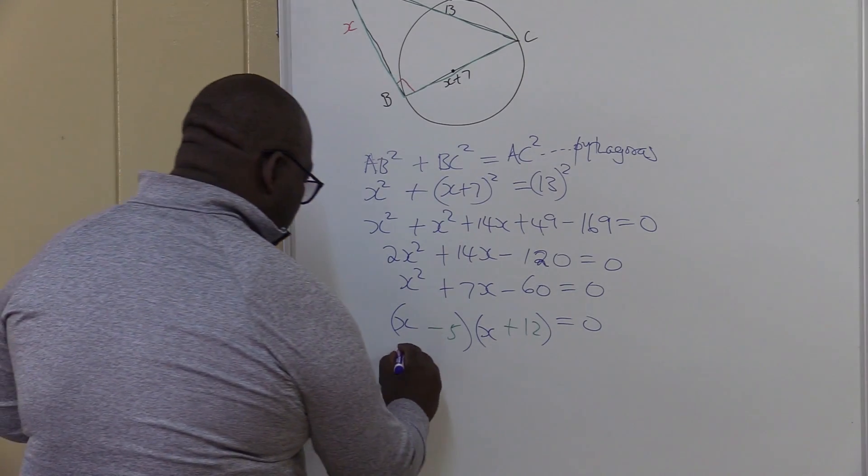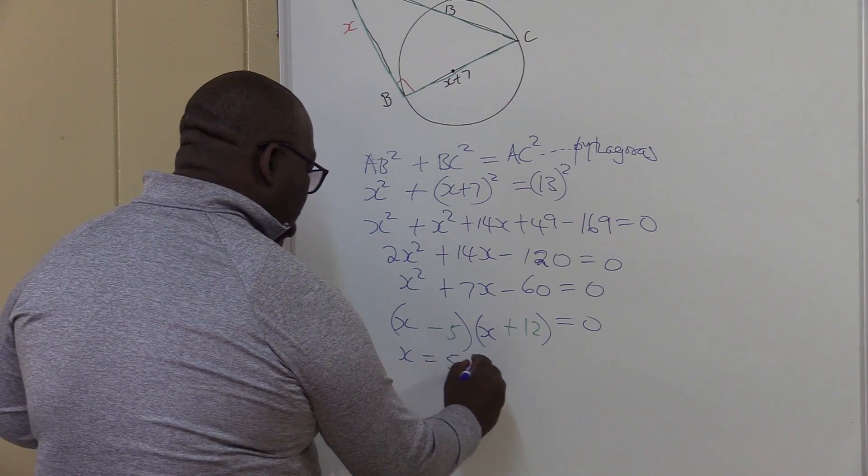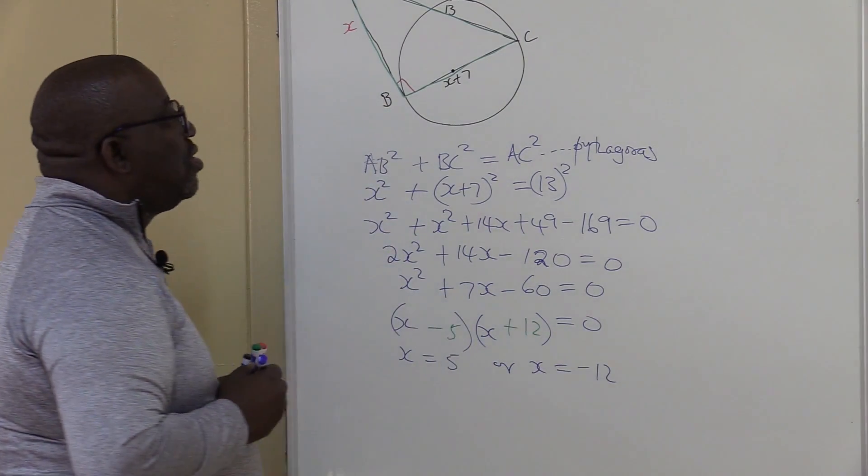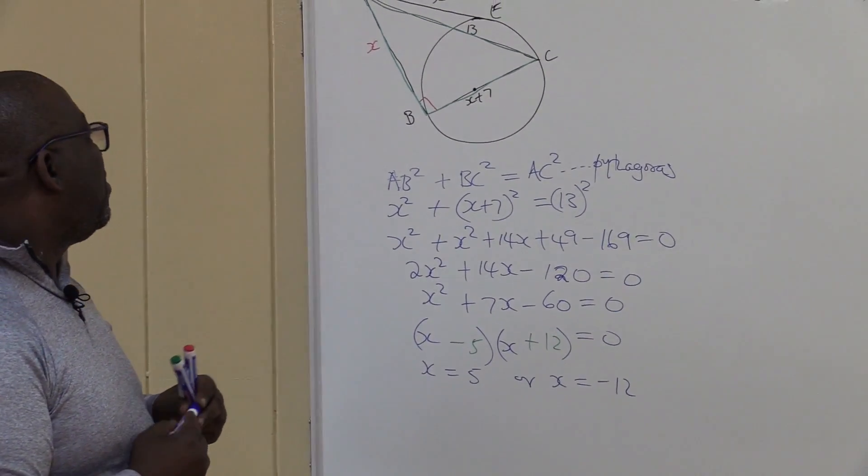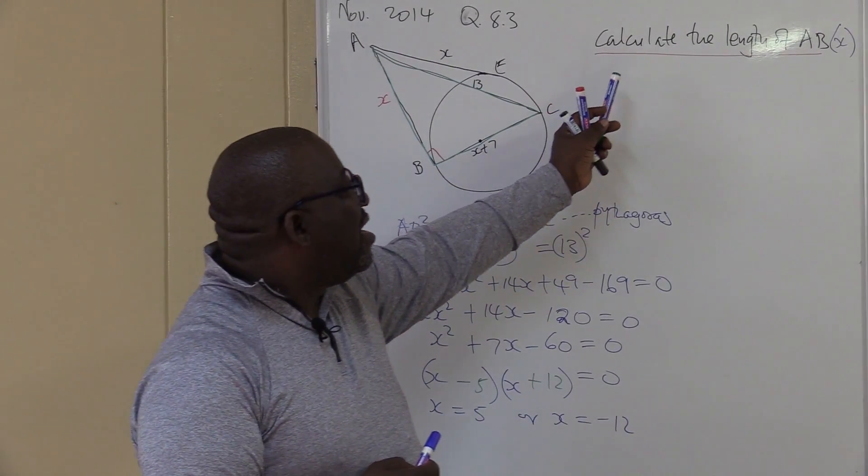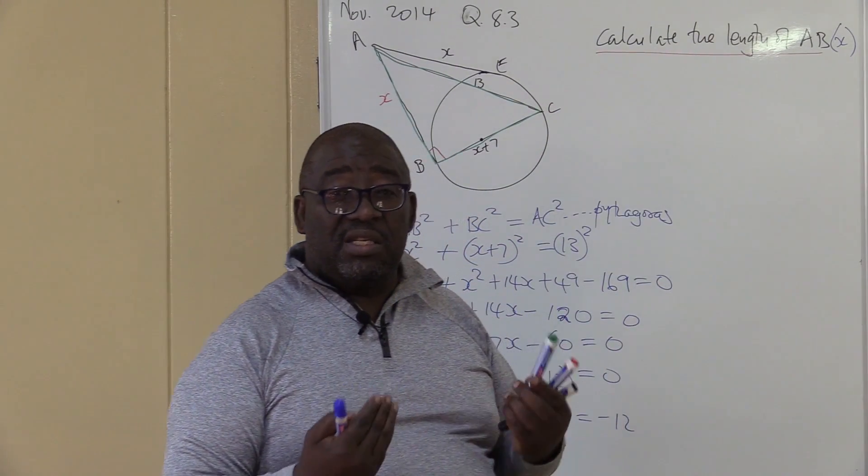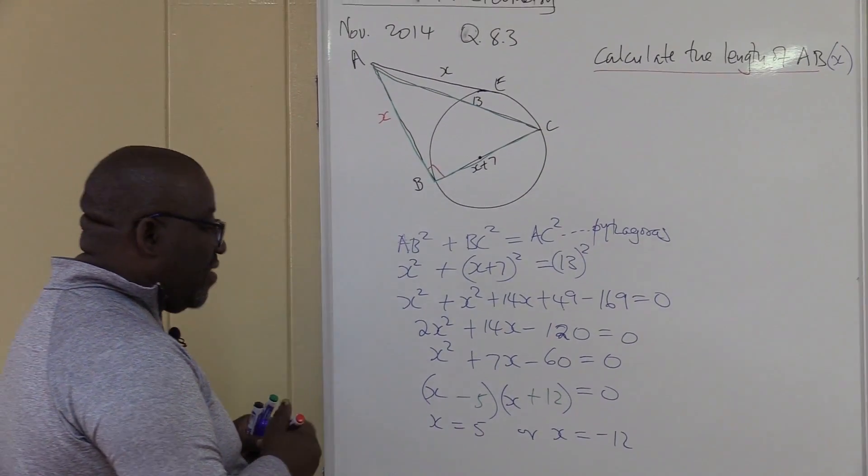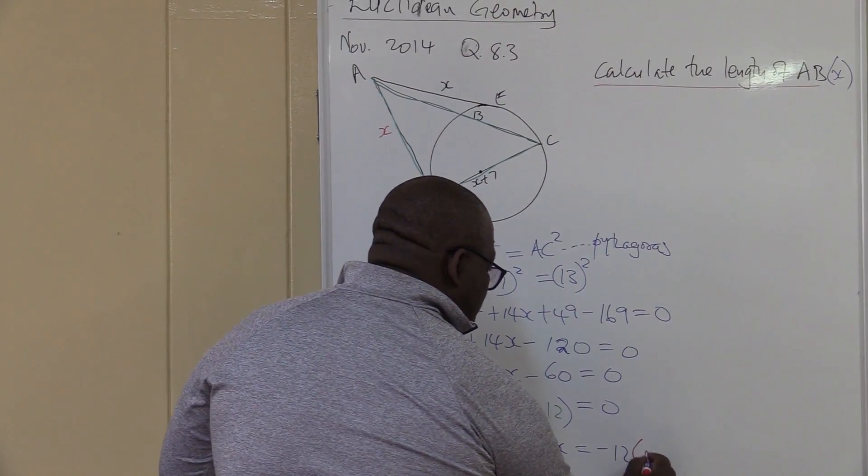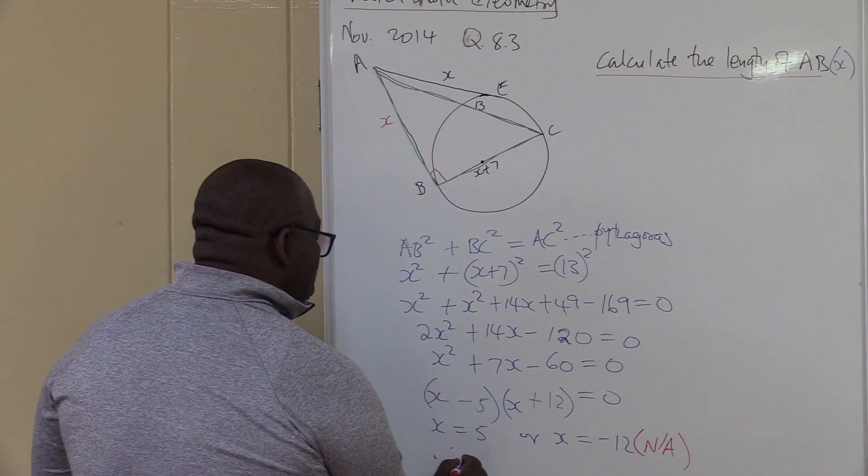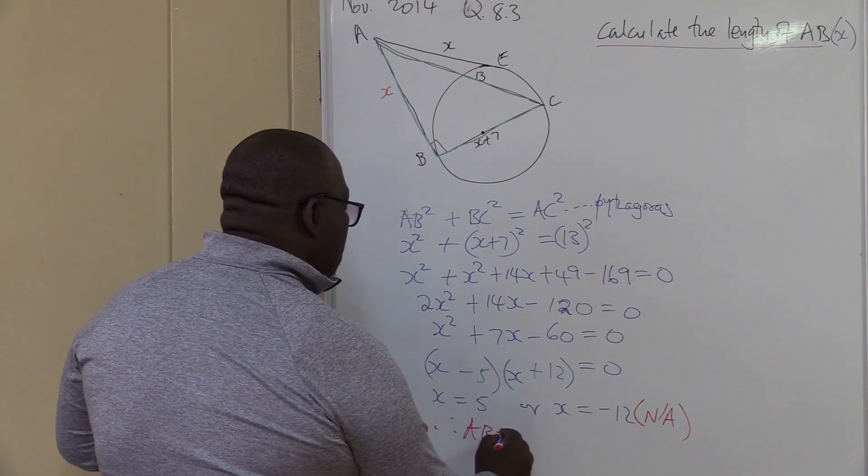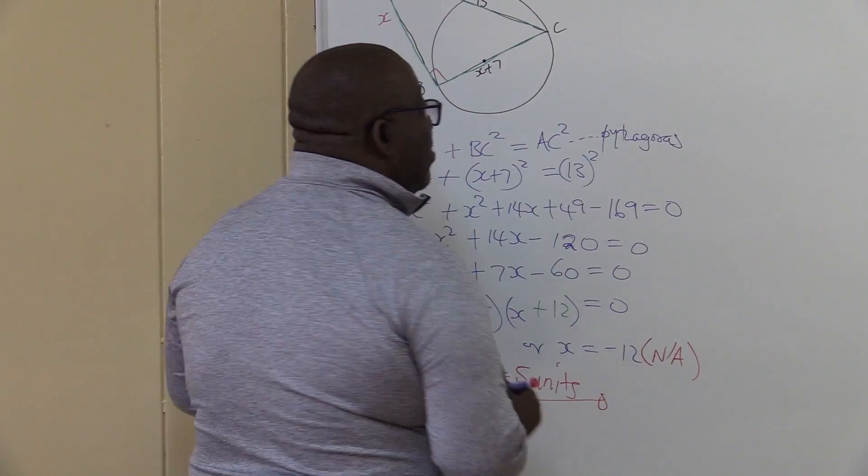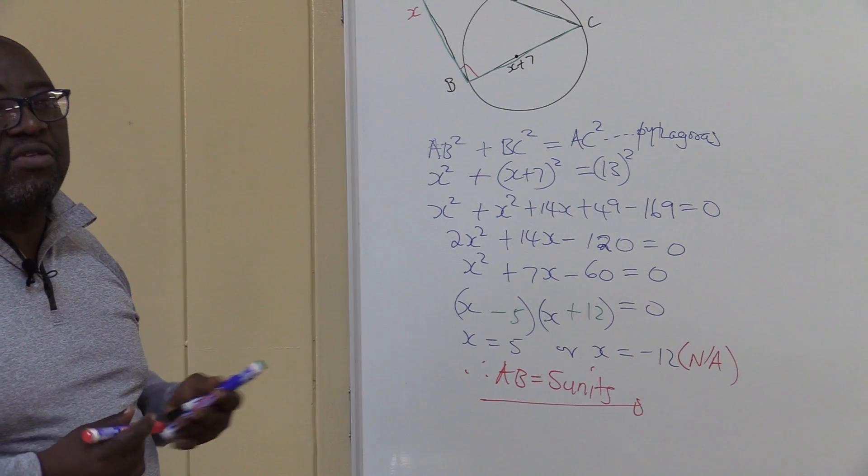Now, we conclude. We're then going to say X is equals to 5 or X is equals to minus 12. These are the two solutions that we have of X. But remember, we're just looking. The question was very clear. Calculate the length. What is the length? It is the distance. And the distance is always positive. Therefore, whenever you find the negative answer, you reject it. This is not applicable. Therefore, AB will be equals to 5 units. Whatever units that we have been given there, that's how we'll go about finding the length of AB.